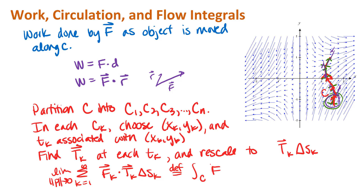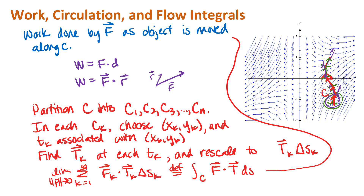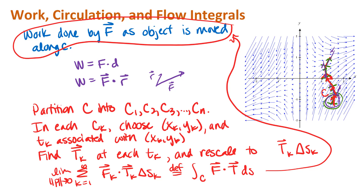This gives us an integral of F dot T ds, which gives the work done by F as an object moves along the curve. That does require a smooth parameterization. Let's look at some graphs and talk about what this means and then how to evaluate these integrals.